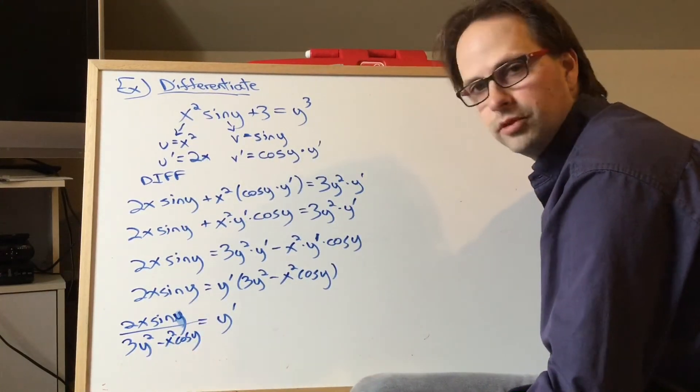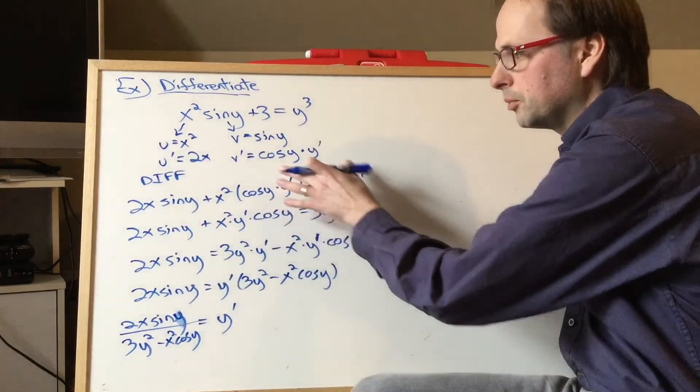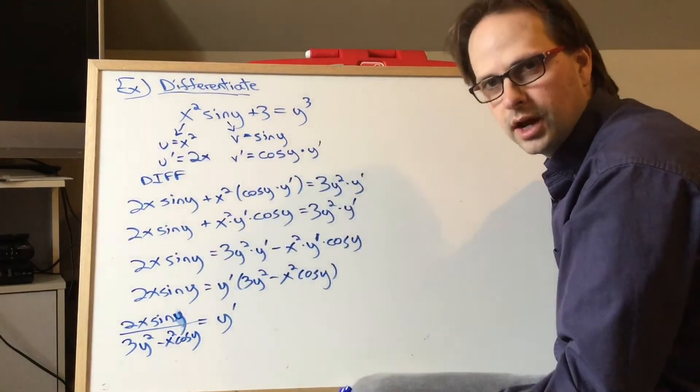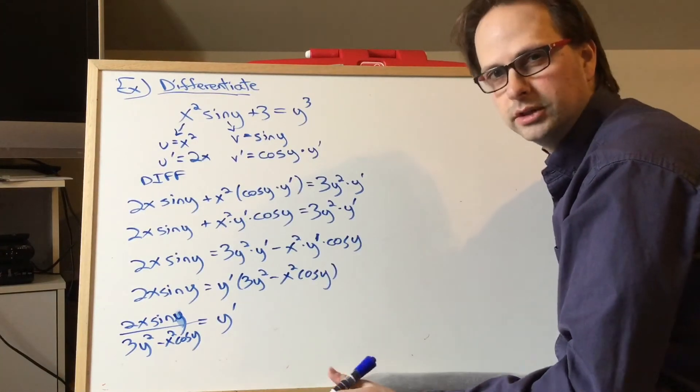There's an expression for the slope anywhere. We could have done it by putting the y primes on the other side. It'll look a tiny bit different, but it will mean the exact same thing. I'll quickly show that.